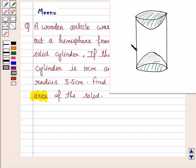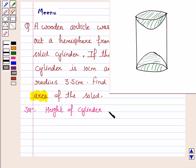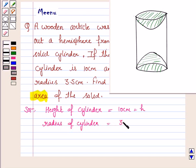We are given a solid cylinder from which a hemisphere is cut out from each end, and we have to find the total surface area of the solid. We are given that the height of the cylinder is 10 cm — let's denote it by H — and the radius of the cylinder is 3.5 cm, let's denote it by R.